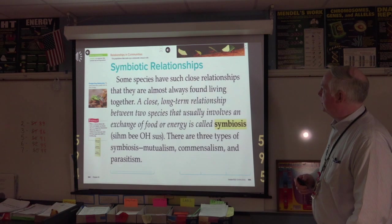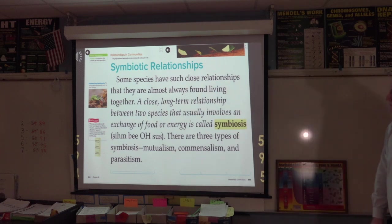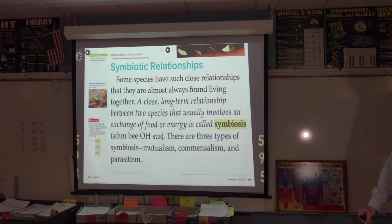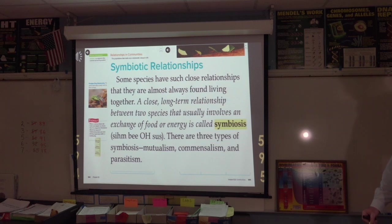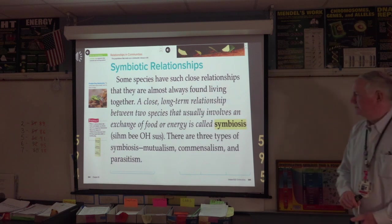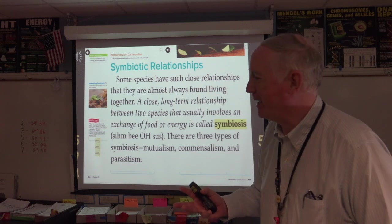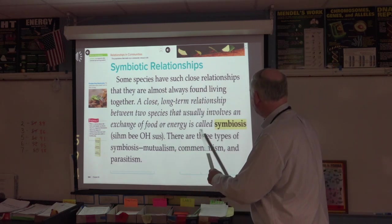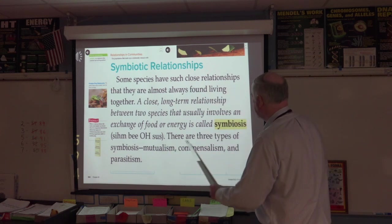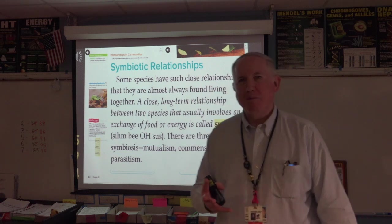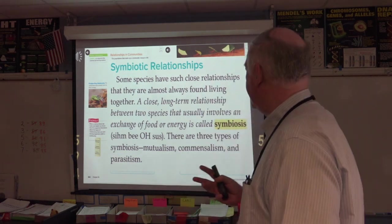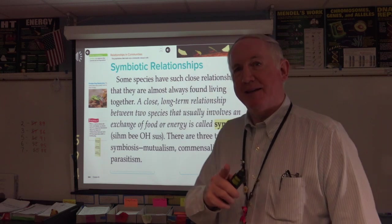Moving on to relationships in communities — symbiotic relationships. Some species have such close relationships that they are almost always found living together. A close, long-term relationship between two species that usually involves an exchange of food or energy is called symbiosis. There are three types of symbiosis: mutualism, commensalism, and parasitism. On your concept map, you would simply write 'symbiosis,' and underneath it list the three types.